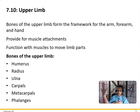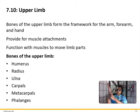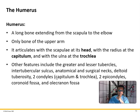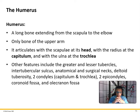To remember orientation: in the anatomical position, the radius is on the thumb side — think 'radical dude, thumb up, radius' — and the pinky and ulna match up. The humerus is a long bone extending from the scapula to the elbow. It articulates with the scapula at its head, with the radius at the capitulum, and with the ulna at the trochlea.